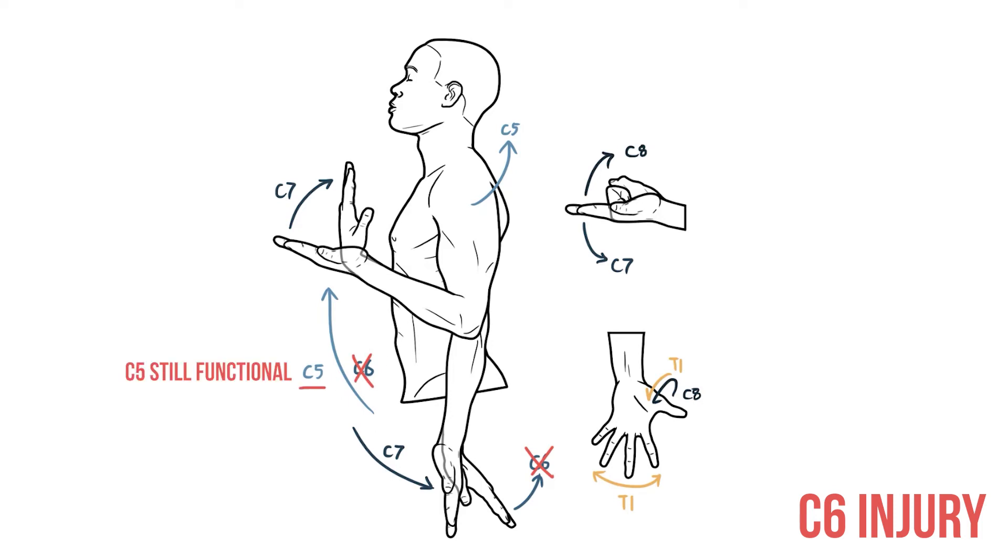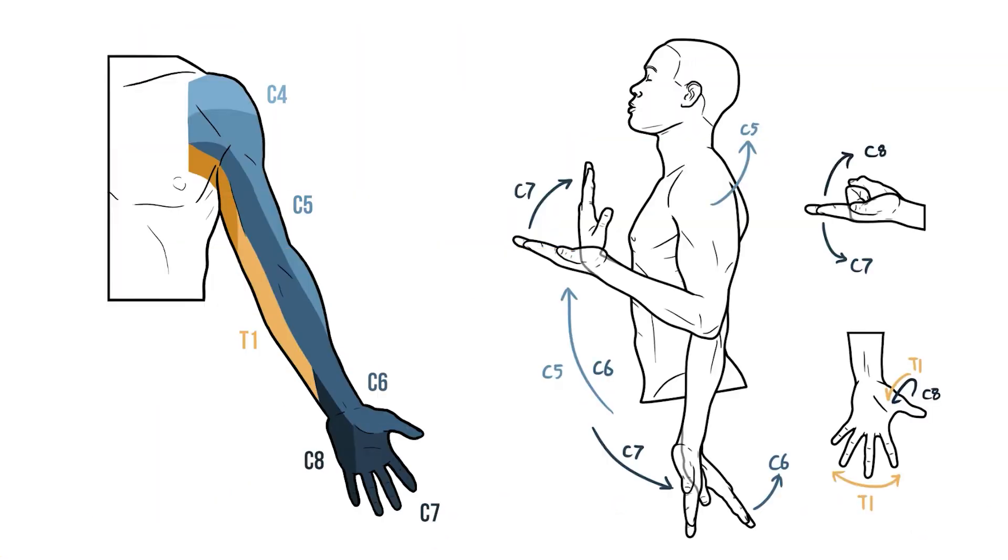So those are the major dermatomes and myotomes of the upper limb. Remember, if a nerve root is damaged, then both its dermatome and myotome should be affected. If the pattern of dermatome and myotome loss doesn't match up, then it probably isn't a nerve root injury.